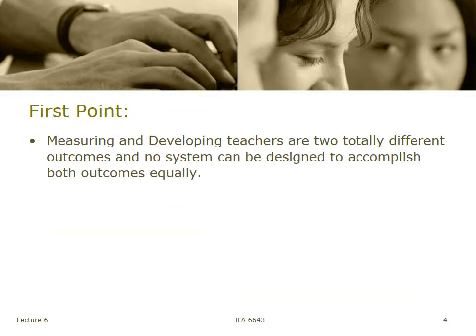This brings us to our first substantive point: when we measure and develop teachers, we're actually doing two different activities, and there's no system that can be designed to accomplish both outcomes equally. Measuring is the evaluation part — where we hold the teacher up to a rubric or metric and determine if they're competent or effective. But the other aspect has to involve: 'you're not as effective as you need to be — how can we as a school district make you more effective?' We don't have that component in a lot of our evaluation systems.